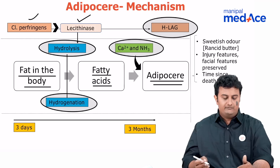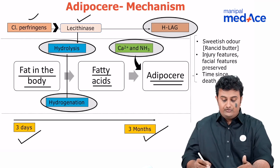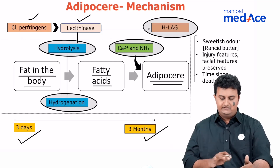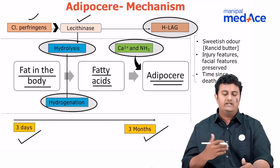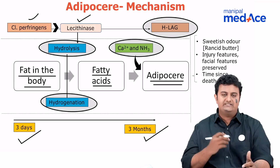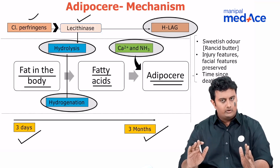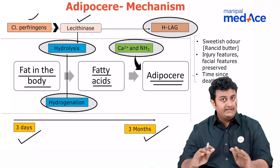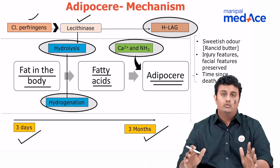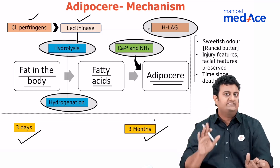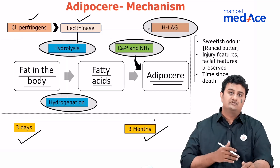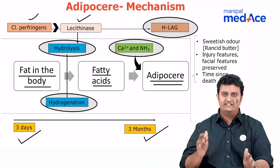The total time taken for this process is anywhere between three days to three months. They have found cases of bodies which have undergone saponification in as little as three days — not saying the entire body has become adipose ear-laden, but that adipose ear formation has taken place somewhere in the body. So three days to three months is the range we're looking at.